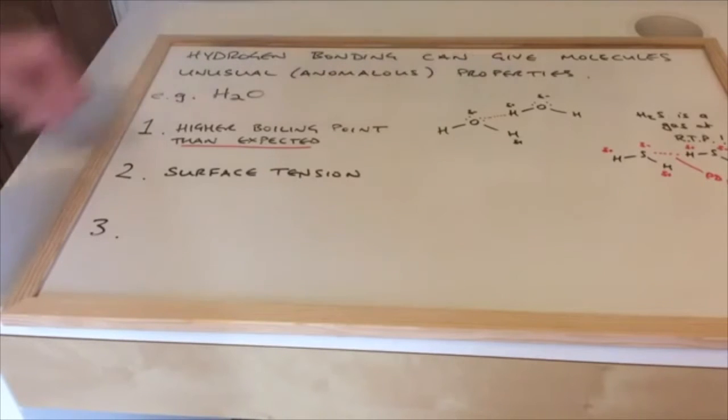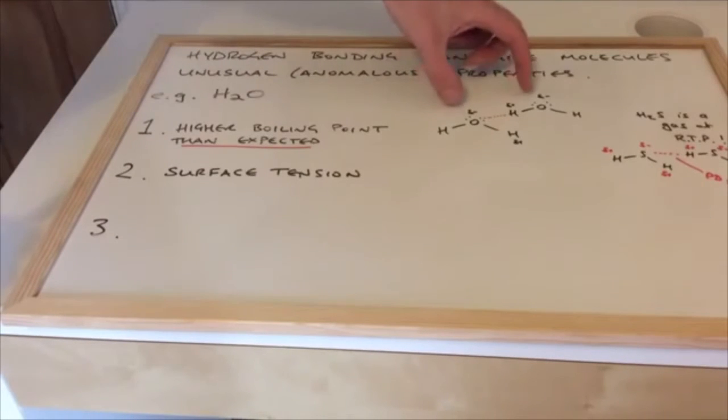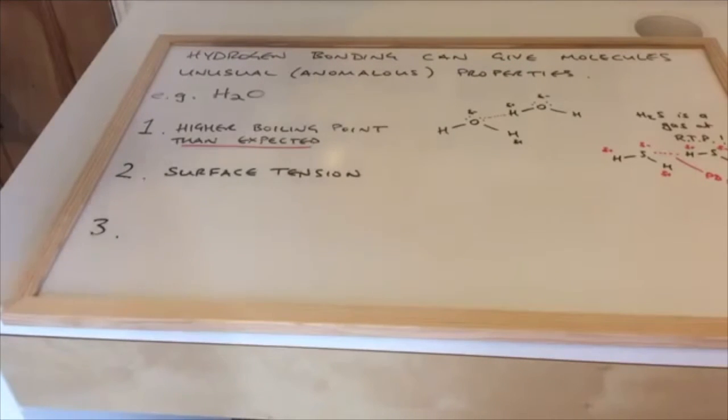can actually walk on the water. So these water molecules aren't just drifting apart really easily - there's a decent force holding them together, and so these creatures can actually walk on the water, and it gives it this surface tension property.